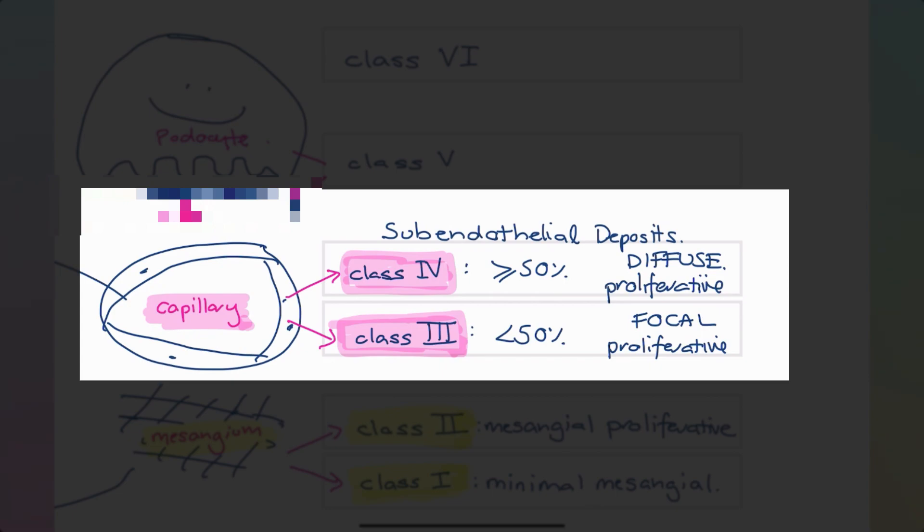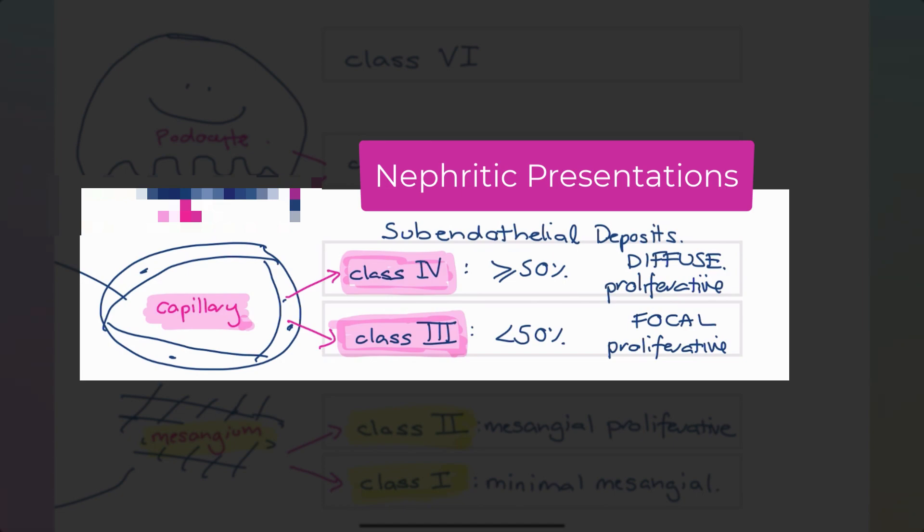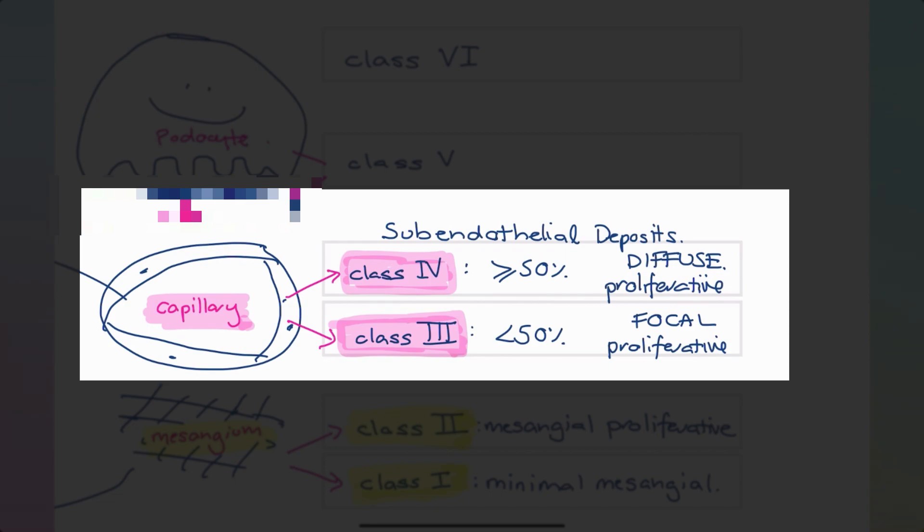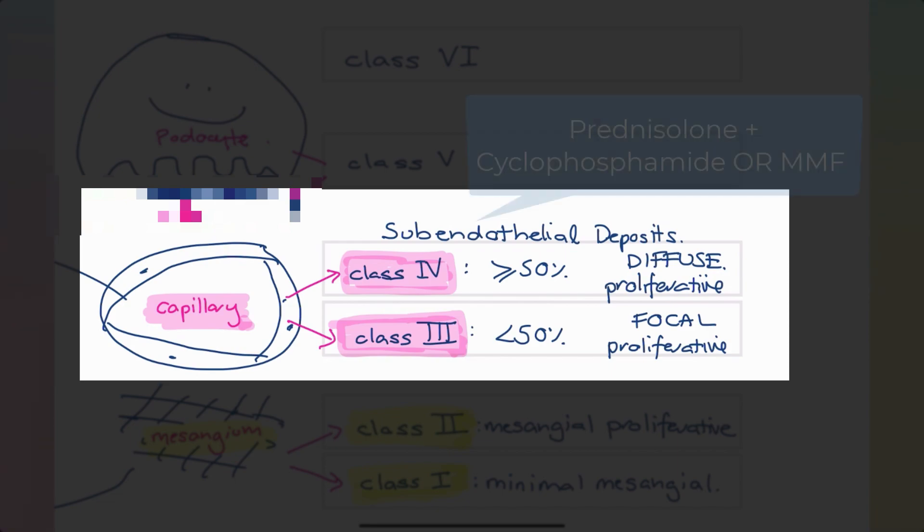These types of lupus nephritis tend to present as a nephritic syndrome, where we have hematuria, proteinuria, and elevated creatinine. Again, class three and four are the ones that are associated with a particularly poor renal prognosis, and we need to sort this out with immunosuppression.